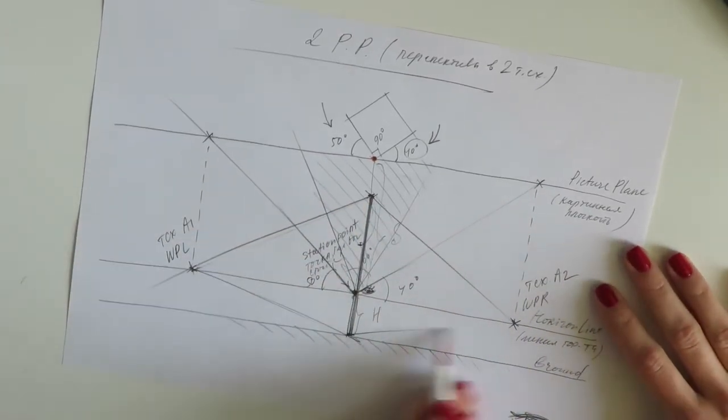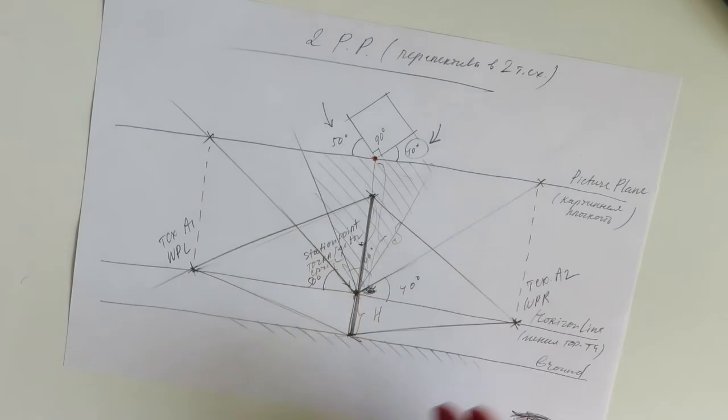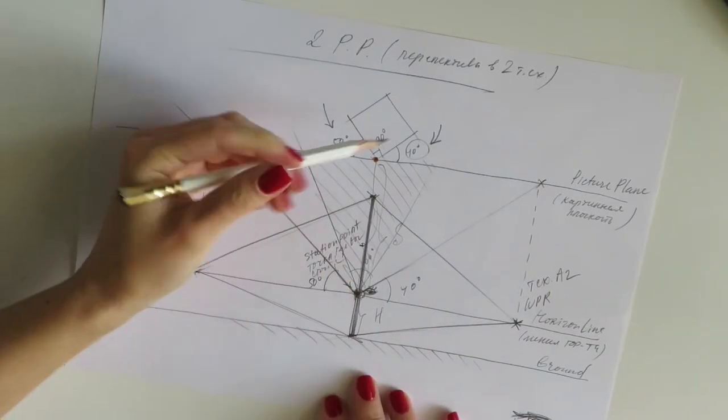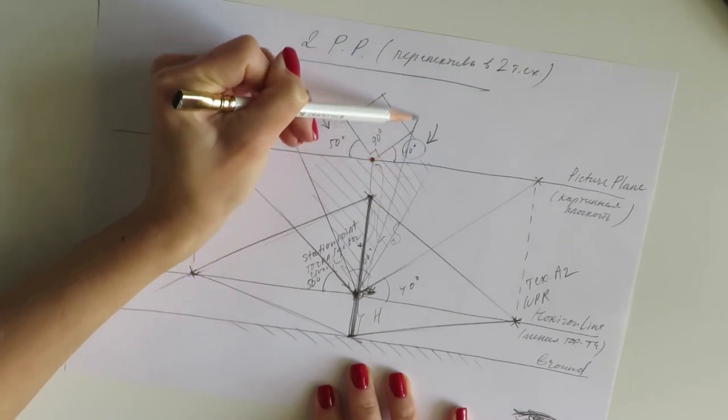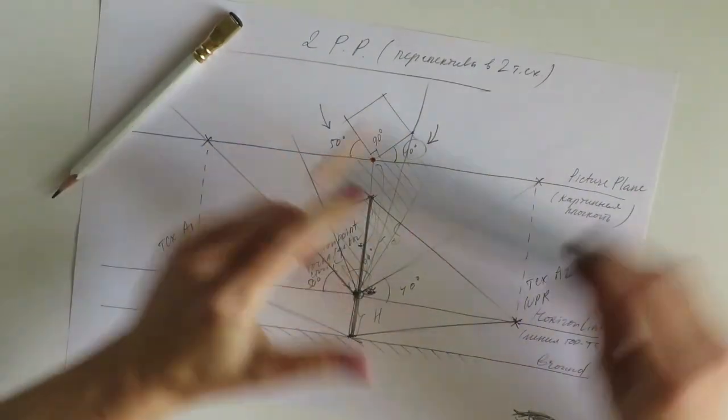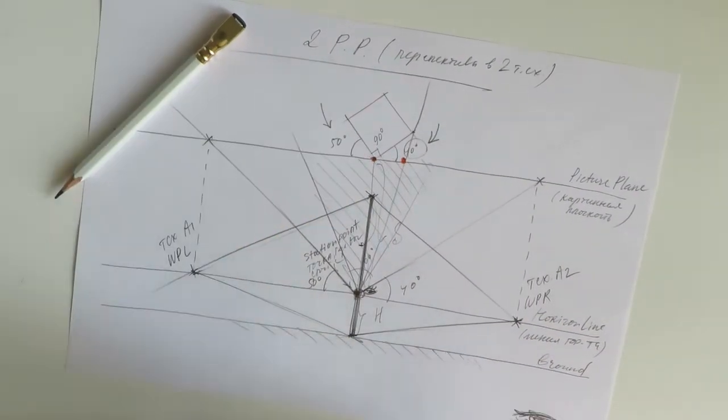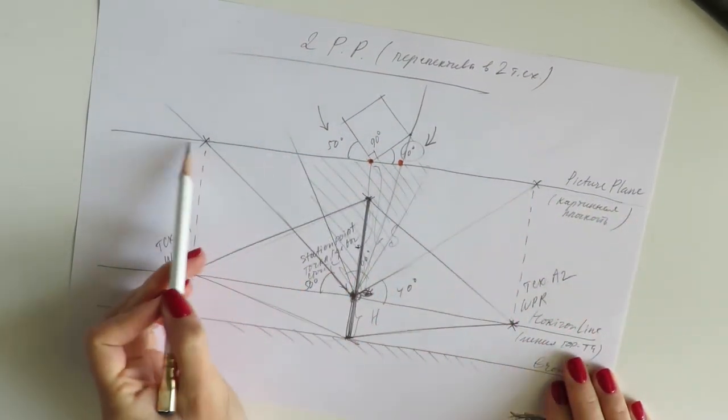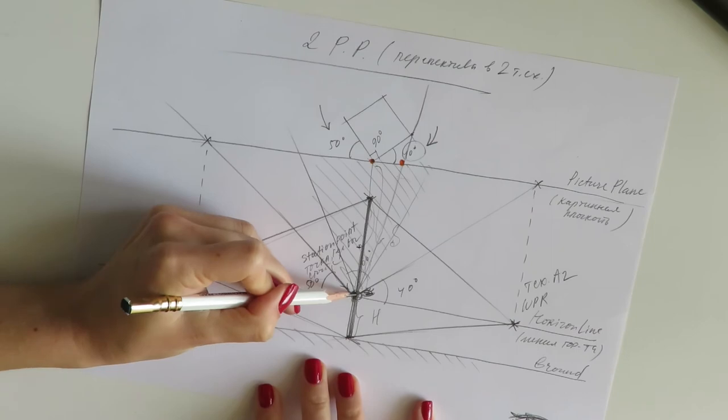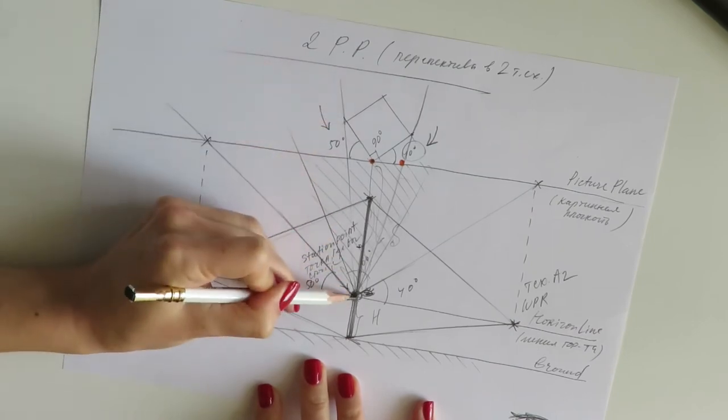Well, now it's time to describe the size of this building. In order to find the end points, you start at this station point, draw a line up to that corner, and where that line intersects the picture plane, you bring it straight down. And that is gonna give you the end of that wall, that corner.